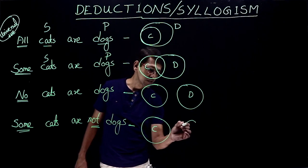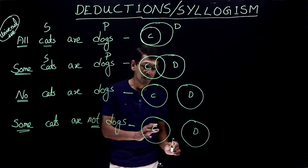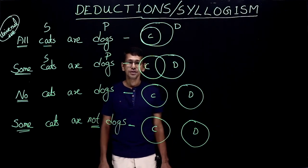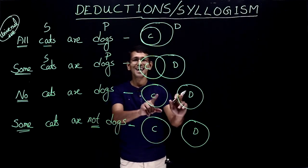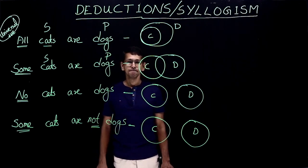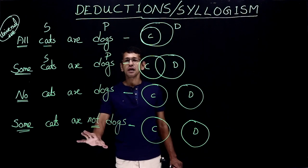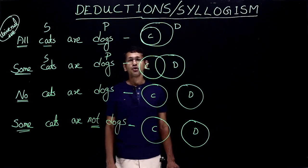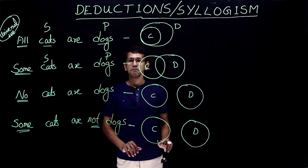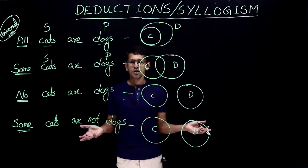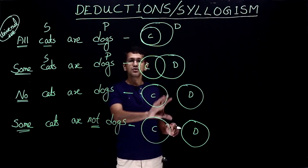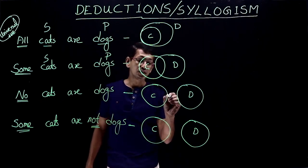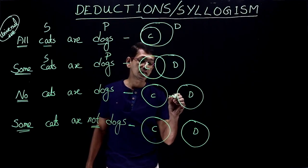How about drawing a diagram like this: cats and dogs as two circles. If I take some cats from here, they are not dogs. However, these two diagrams — for no cats and for some cats are not — look exactly the same. The statements are different, so the diagrams cannot be exactly the same when it comes to logical interpretation, even though physically they could look the same.